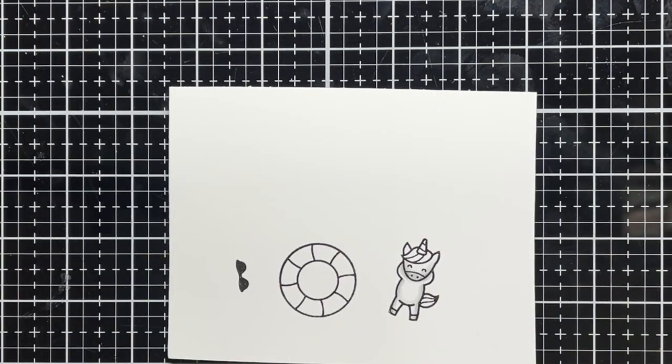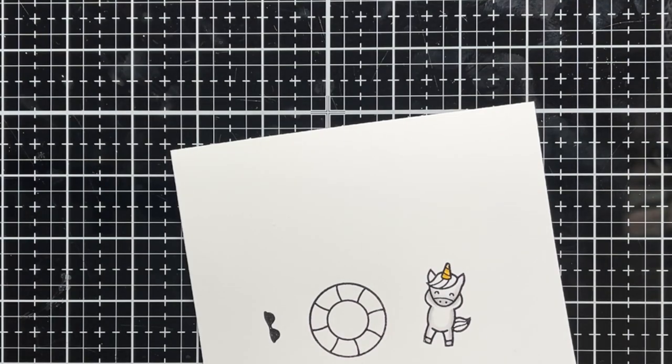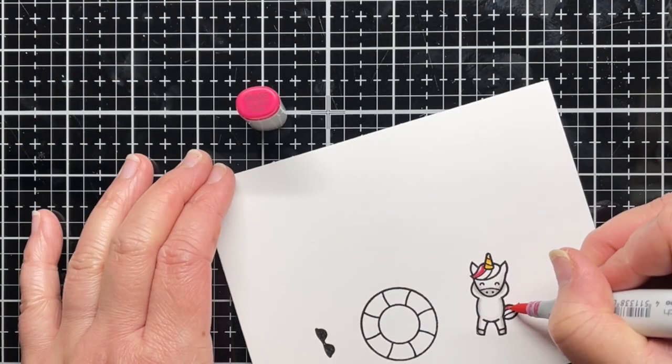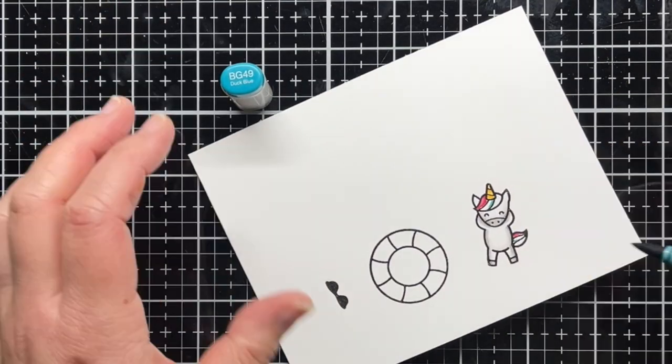Next I color the images with Copic markers. I'm using toner grays for my unicorn and a rainbow of colors for his mane and tail. I'm using three shades for each color and I start with the darkest color first and then blend out to the lightest.